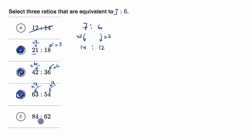And so we've already selected three, but let's just verify that this doesn't work. So to go from seven to 84, you would multiply by 12. To go from six to 62, what was it? You'd multiply by 10 and two-sixths, or 10 and a third. So this one is definitely not an equivalent ratio.